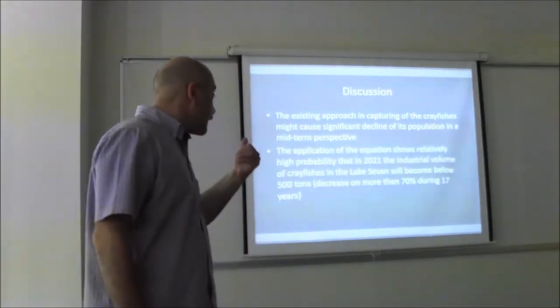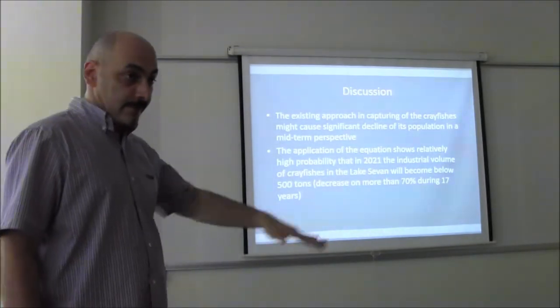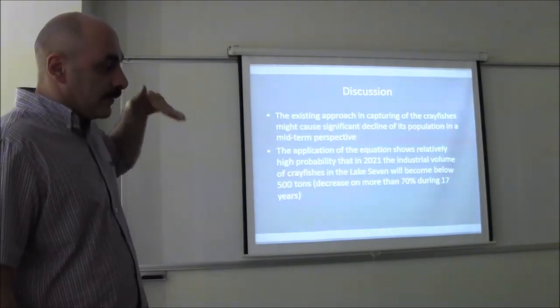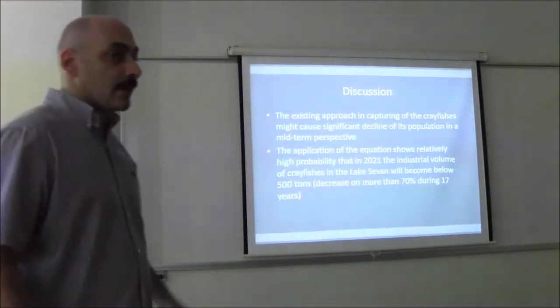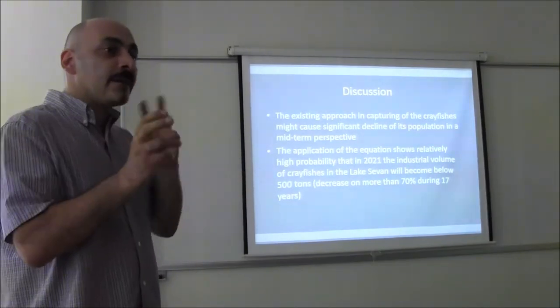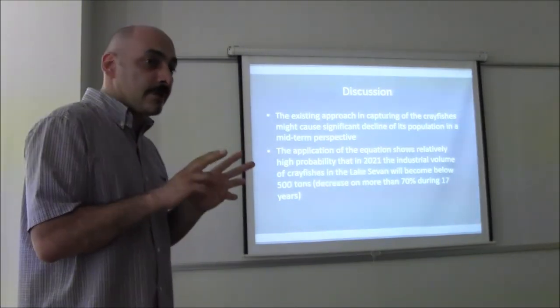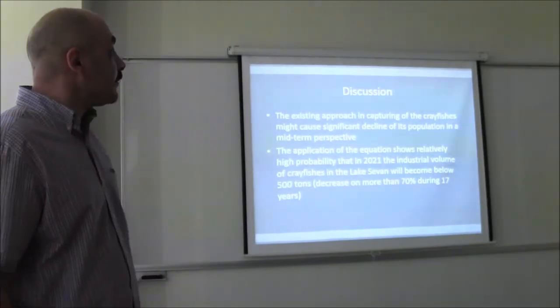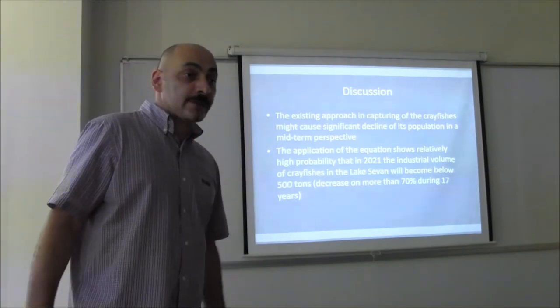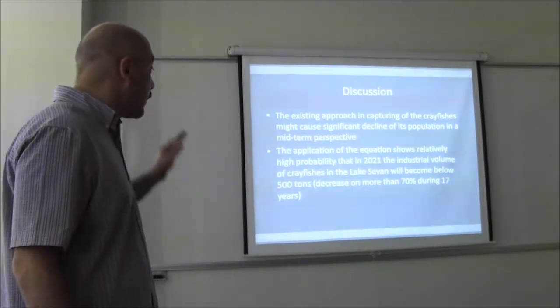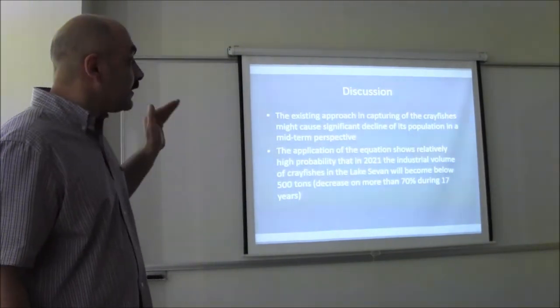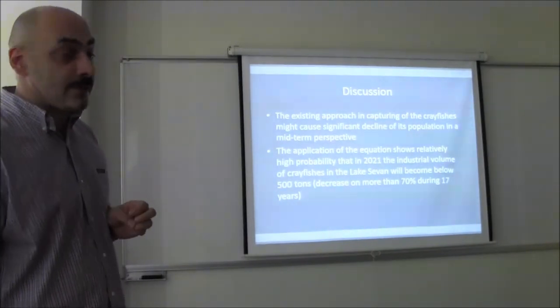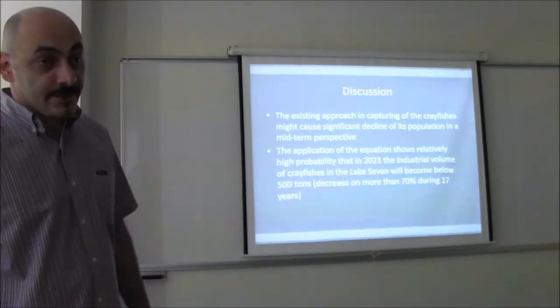And the application of this equation, of the formula that we found, if we continue the trend, it shows that if nothing will be changed, if nothing is changed, then population of crayfishes by 2021 will decline on more than 70%. So in total it will be below than 500 tons.